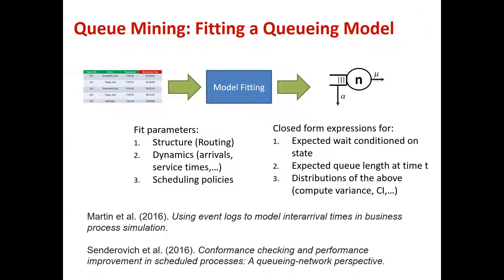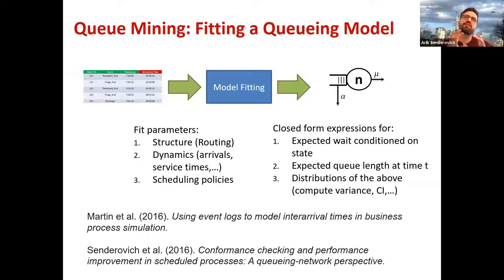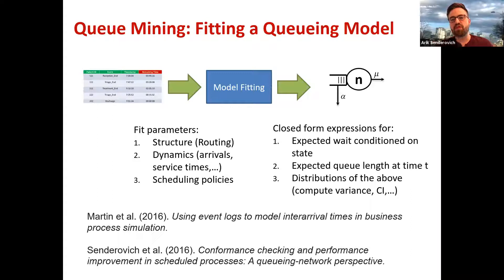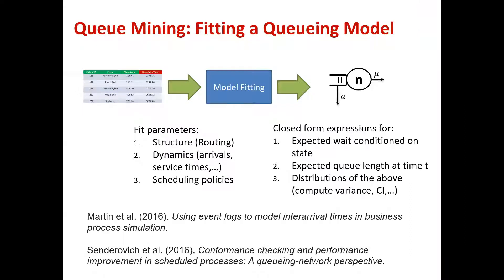A question arose about whether these models analyze the system as isolated parameters versus as a whole network of interrelations. The answer: the explanation focused on the single station view, but this can be integrated into a network where parameters are fitted jointly. That leads to the first data story: call centers, which correspond to single server queues. In a call center, calls arrive and a group of homogeneous agents serves them; we assume single-class customers for now, with more general extensions possible.